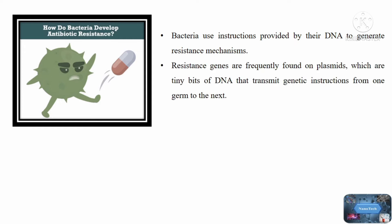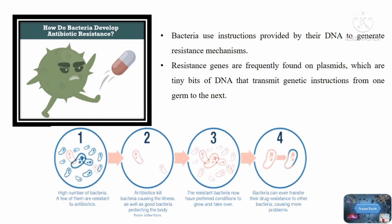How does antibiotic resistance spread? Antibiotic resistance spreads genetically through bacteria populations both vertically, when new generations inherit antibiotic resistance genes, and horizontally, when bacteria share or exchange genetic material with other bacteria. Horizontal gene transfer can even occur between bacterial species that are genetically unrelated. In the environment, as bacteria move from place to place, they can travel by air, water, and wind. People can spread resistant bacteria to others by coughing or coming into contact with unwashed hands.